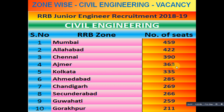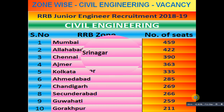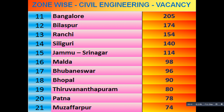And in Ajmer 333, in Kolkata 335, in Ahmedabad 280, in Chandigarh 269, in Secunderabad 266, in Guwahati 259, in Gorakhpur 215, in Bengaluru 205, in Bilaspur, Ranchi 114, and in Muzaffarpur 74.